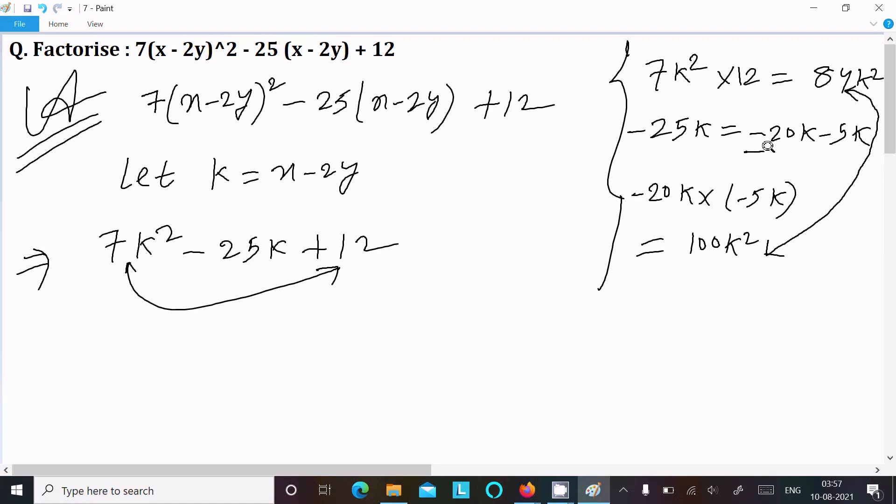When I take minus 20 and minus 5, this combination we cannot take because these two are not same. So trying with another combination. This time I am going to use minus 21k minus 4k.